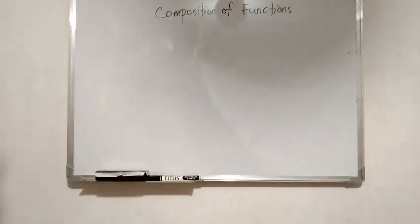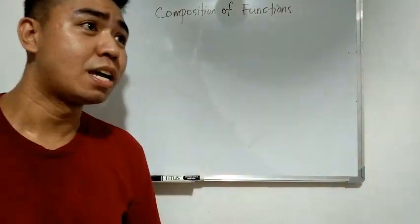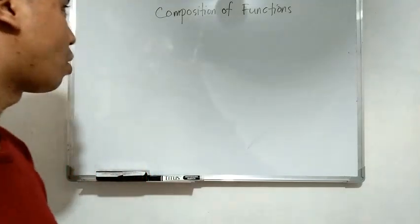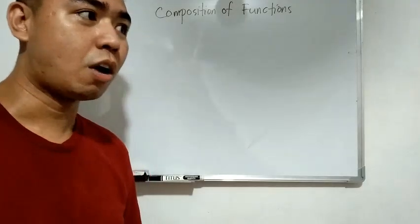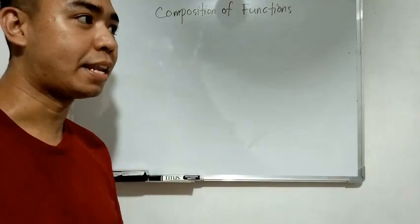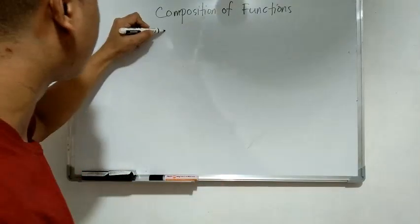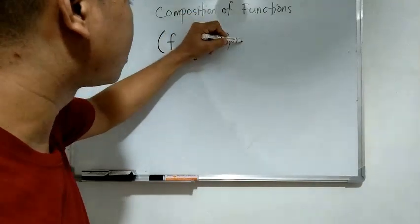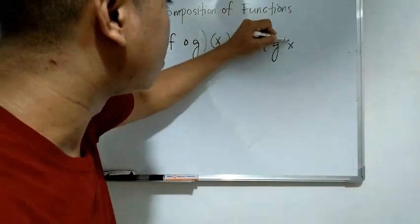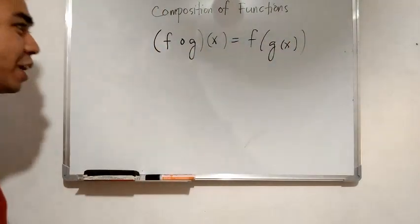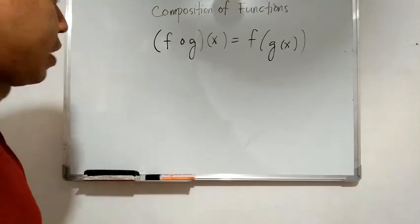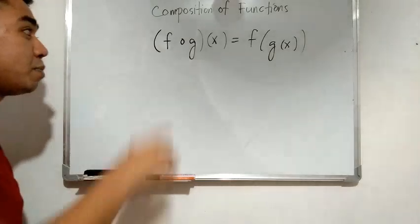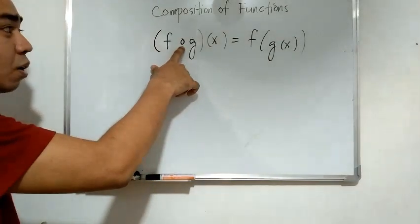We have finished operations of functions — we have addition, subtraction, multiplication, and division of functions. So today, let's talk about composition of functions, which is also one of the operations of functions. f circle g of x is equal to f of g of x. This open circle is different from the multiplication operation — this means that we use composition of functions.